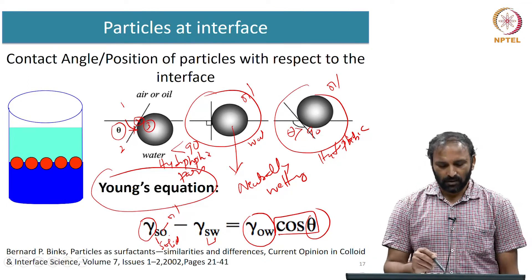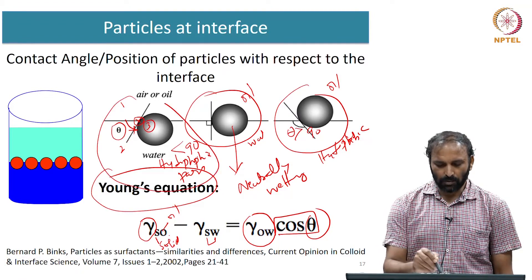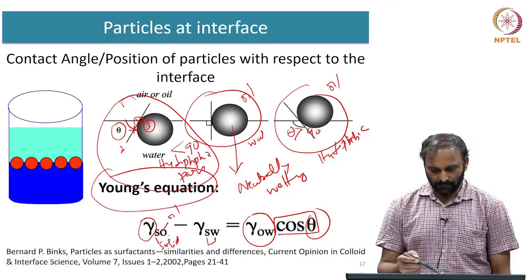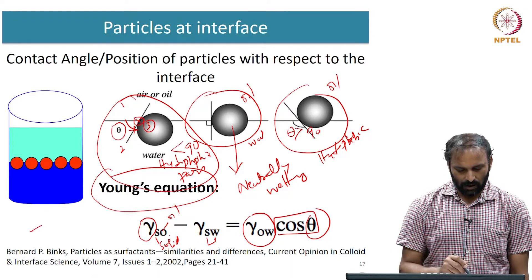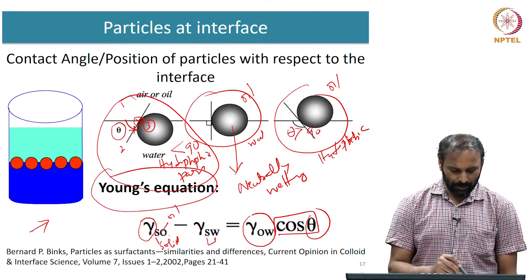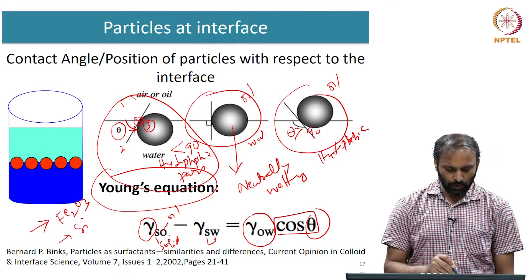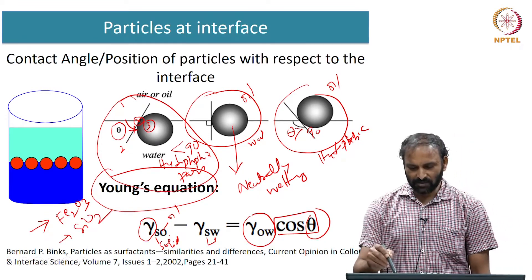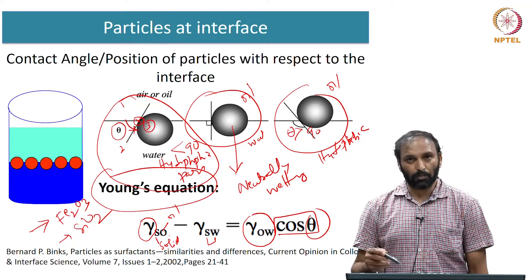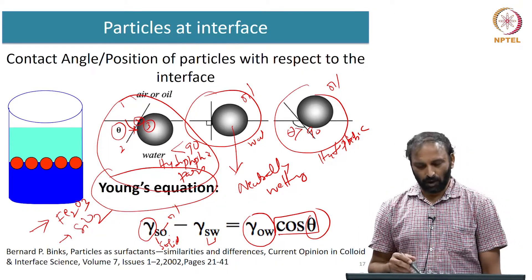Depending upon the type of particles, they could prefer contact with the aqueous fluid. Examples of such particles include several metal oxide particles, for example hematite particles or SiO2 particles. Examples of particles more prone to being in contact with oil could be several types of polymeric particles.